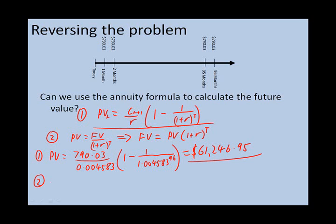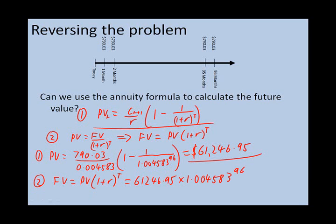All we need to do now to calculate the future value is use the formula: future value equals present value times 1 plus r to the power t. That equals 61,246.95 times 1.004583 to the power of 96, which equals $95,000. So we've successfully reversed the problem and checked our answers.